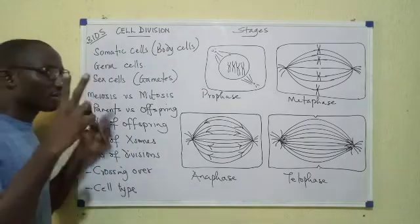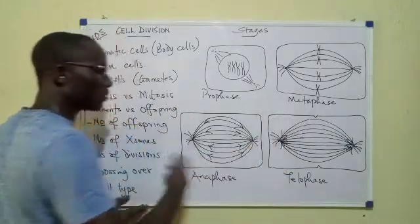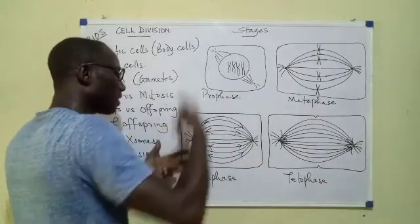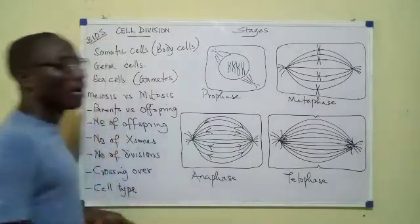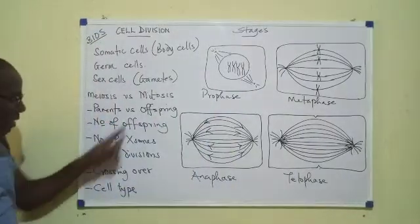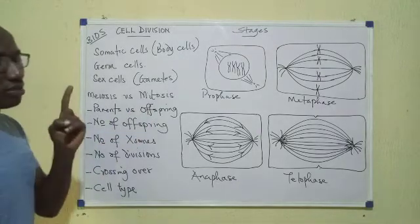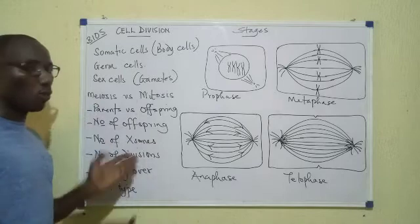Then number of divisions. In meiosis, there are two divisions - the first meiotic division and the second meiotic division, which I told you about before as prophase, metaphase, anaphase, telophase occurring twice. Then in mitosis, there's just one division, PMAT once.